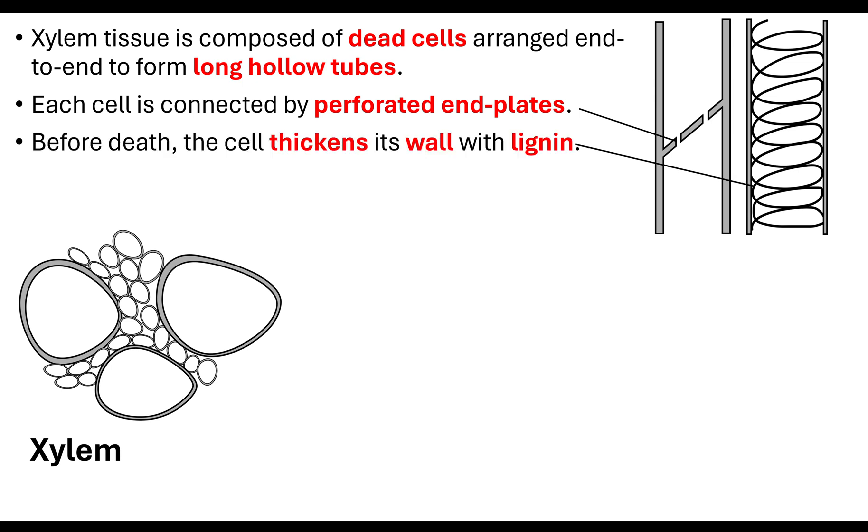Before the cells actually died, what the cell needed to do to ensure that the xylem vessel was strengthened is they had to thicken their cell walls. Remember plant cells have a cell wall which is made up of cellulose. But what the plant actually does in the xylem vessel is it thickens this wall with a polysaccharide called lignin. That polysaccharide ensures that the xylem vessel stays open and does not collapse, so it ensures that the flow of water can continue up through the plant.